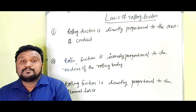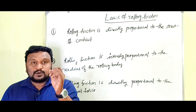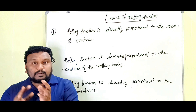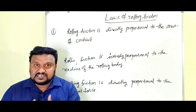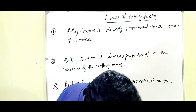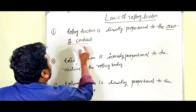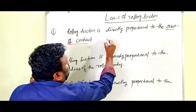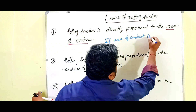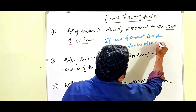Now for the laws of rolling friction. The first law: rolling friction is directly proportional to the area of contact. Directly proportional means if the area of contact increases, rolling friction also increases. So if contact area is more, friction is more. This is the first law of rolling friction.